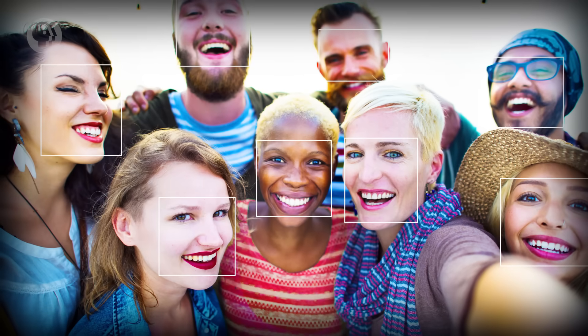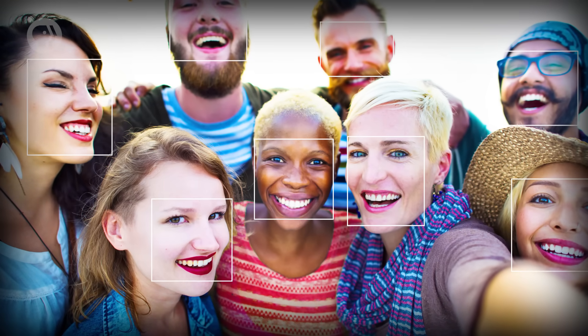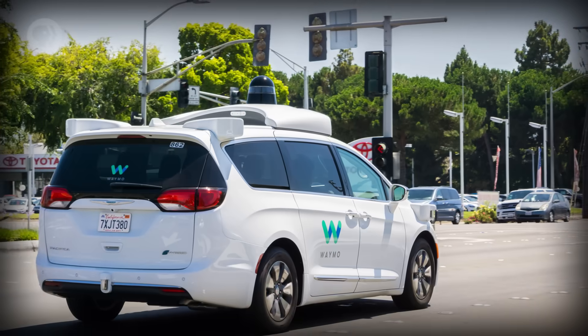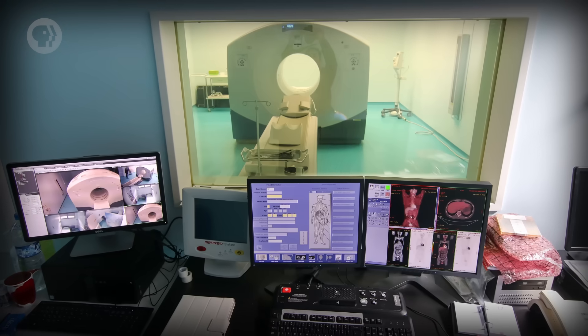A couple of years ago, Google and Facebook demonstrated deep neural nets that could find faces in photos as well as humans. And humans are really good at this. It was a huge milestone. Now deep neural nets are driving cars, translating human speech, diagnosing medical conditions and much more.